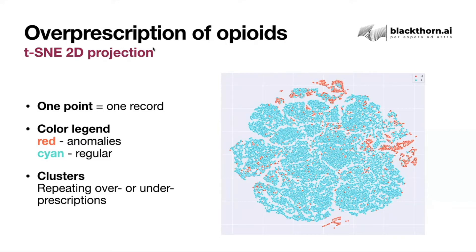Red means something was wrong with this patient and this stay. What exactly, we don't know yet, but we can already spot some dependencies. You can see some stand-alone points, but some points form clusters. The clusters potentially stand for something going wrong regularly.